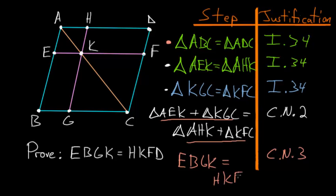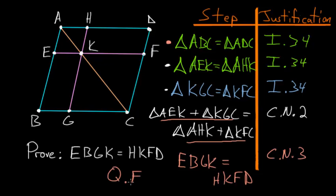What we're left with is that parallelogram EBGK is equal to parallelogram HKFD. This is exactly what we were trying to prove — that the complements about the diameter within a parallelogram are equal to each other. QED.